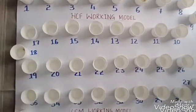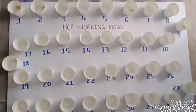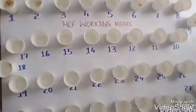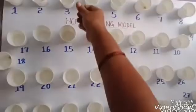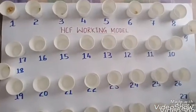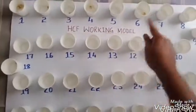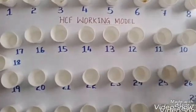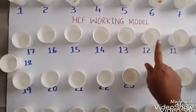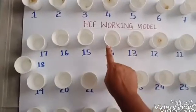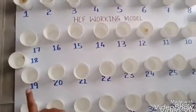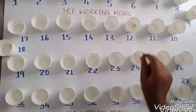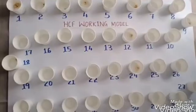The next number we have is 24. Now we will find the factors of 24 using this bead model. In the one table? Yes — one 24s are 24. In the two table? Yes — two 12s are 24. In the three table? Yes — three eights are 24. In the four table? Yes — four sixes are 24. Five table? No. Six table? Yes — six fours are 24. Seven? No. Eight table? Yes — eight threes are 24. Nine? No. Ten? No. Eleven? No. Twelve table? Yes — twelve twos are 24. Thirteen through 23? No. Twenty-four? Yes — 24 ones are 24. So the factors of 24 are 1, 2, 3, 4, 6, 8, 12, and 24.